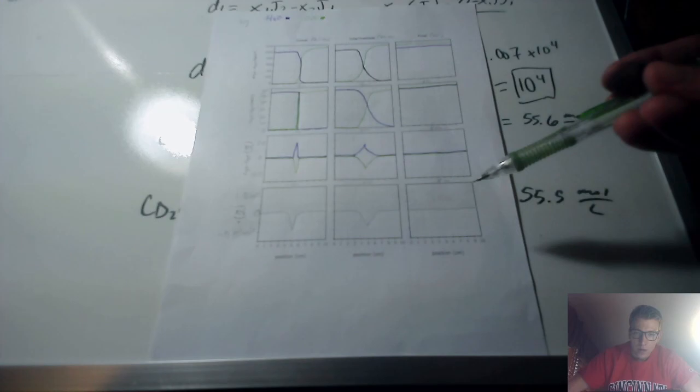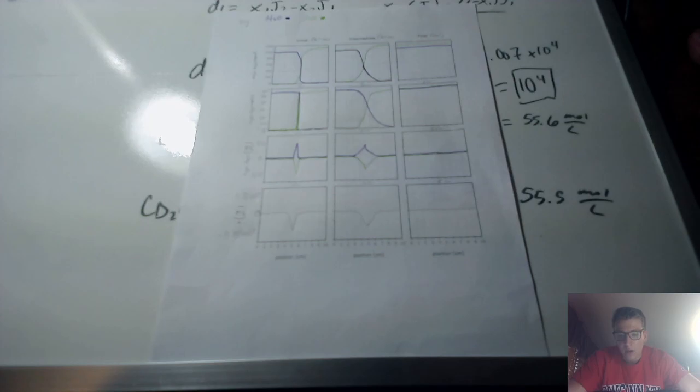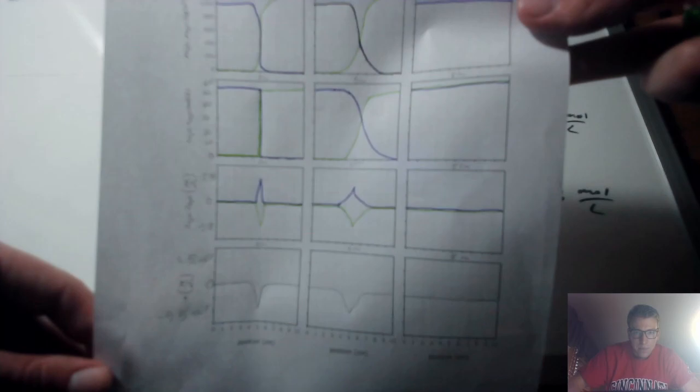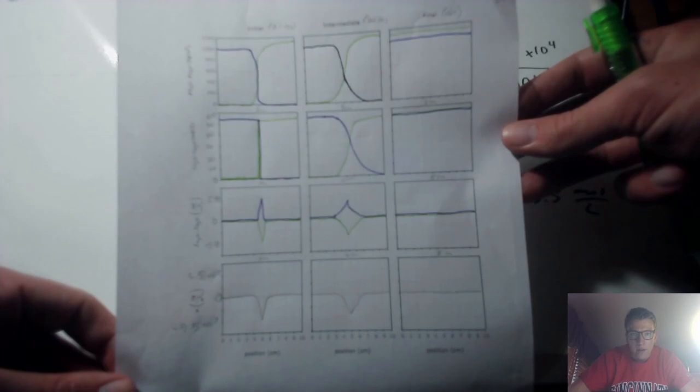At T equals infinity, the total mass flux is zero all the way across the capillary, because the system is at equilibrium, everything is homogeneous, and there are no more driving gradients. That concludes the explanation for all the graphs. Thank you for watching.